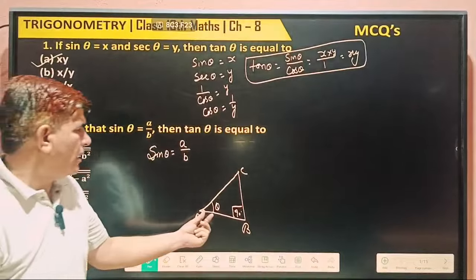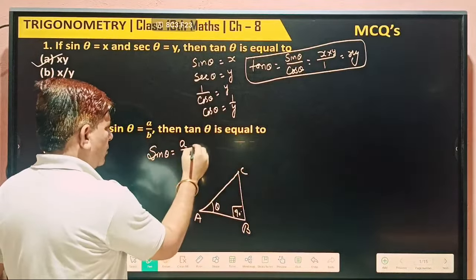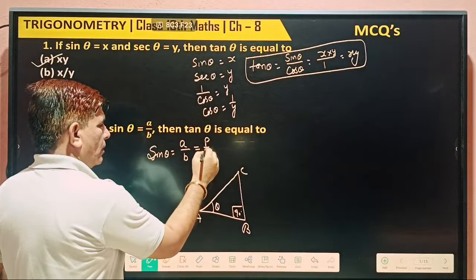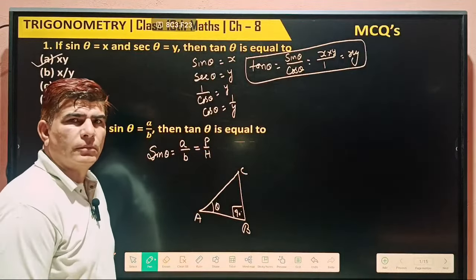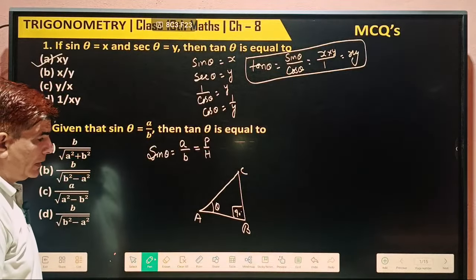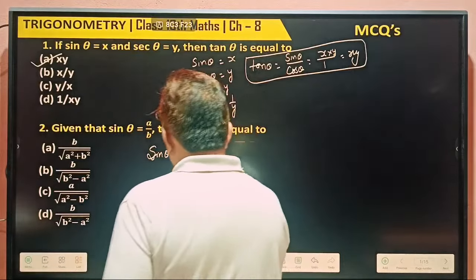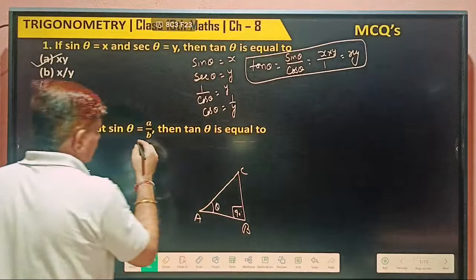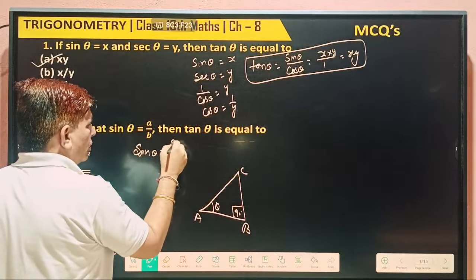Sin θ is, we know, sin θ equal to perpendicular by hypotenuse. Perpendicular by hypotenuse. Otherwise, how can we find out one more method? Which method? You can apply that method. Which one method is this? Sin θ is equal to a by b.